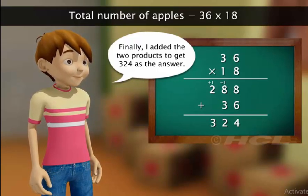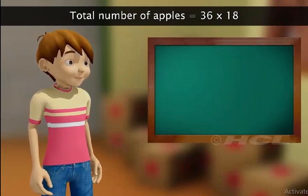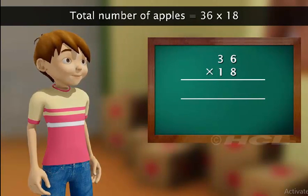Now, let's see where Sam went wrong in his multiplication. Here, Sam was multiplying a two-digit number by another two-digit number. Let's go through the steps of multiplication again.